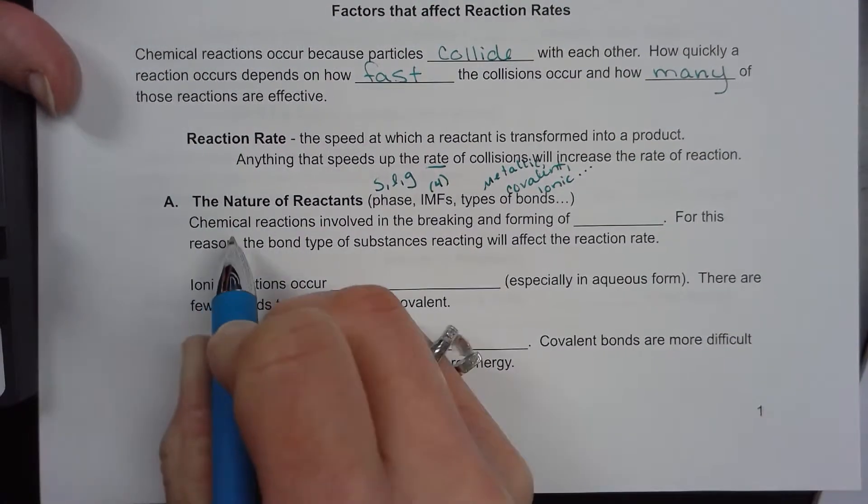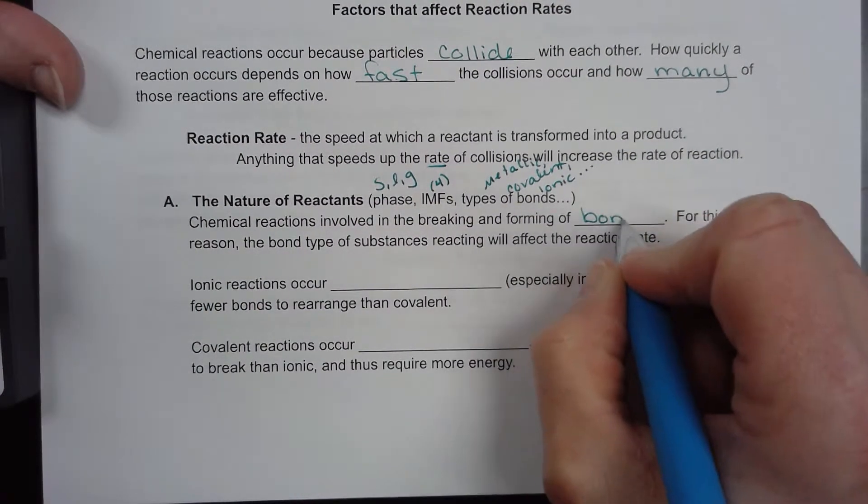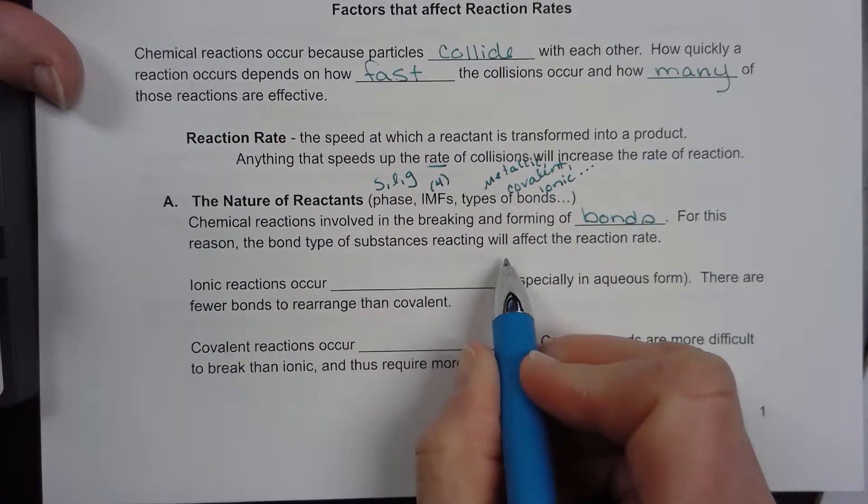Chemical reactions involve the breaking and forming of bonds. For this reason, the bond type of the substance reacting will affect its reaction rate.